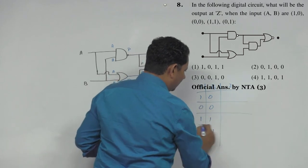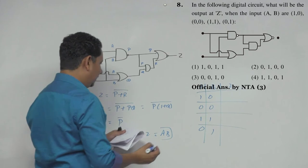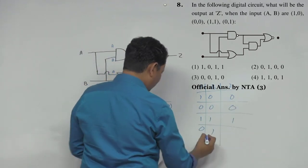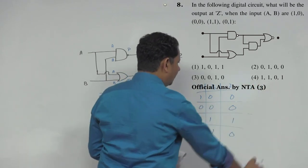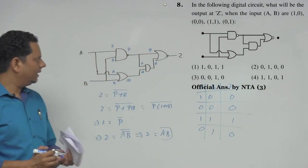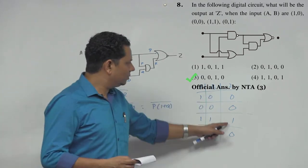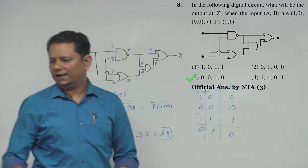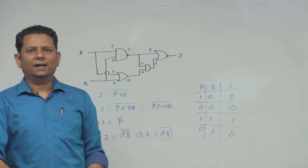So if you can see, for 1,0 the output is 0, for 0,0 it's 0, for 1,1 it's 0. This is A-bar AND B-bar. Based on this we get 0, 0, 1, 0. Option number 3 would be the right answer for this particular problem.